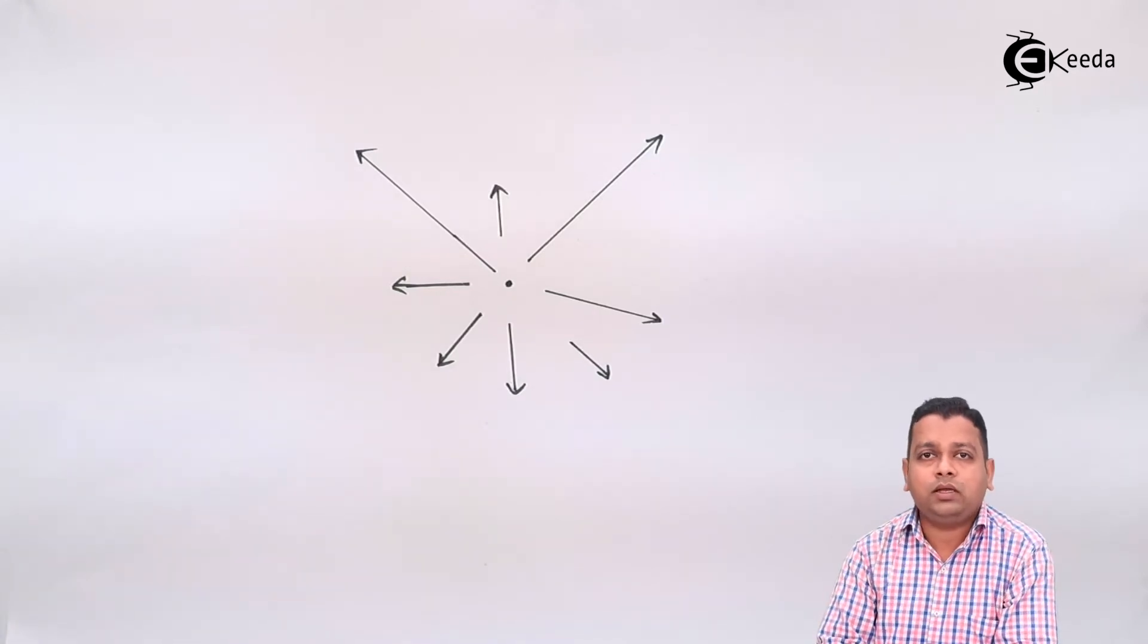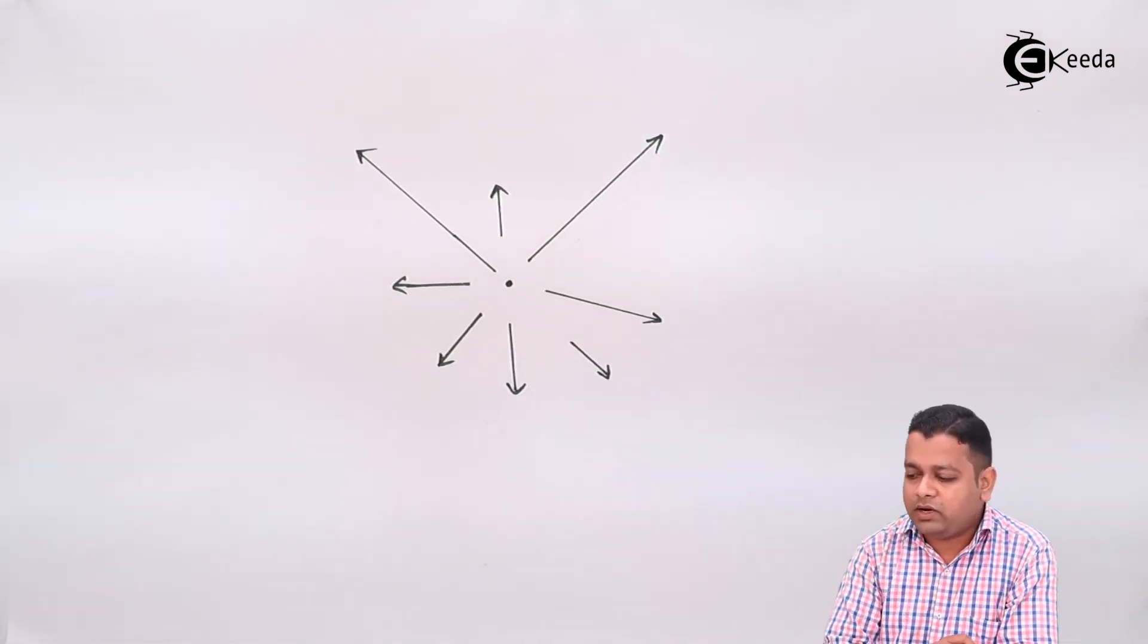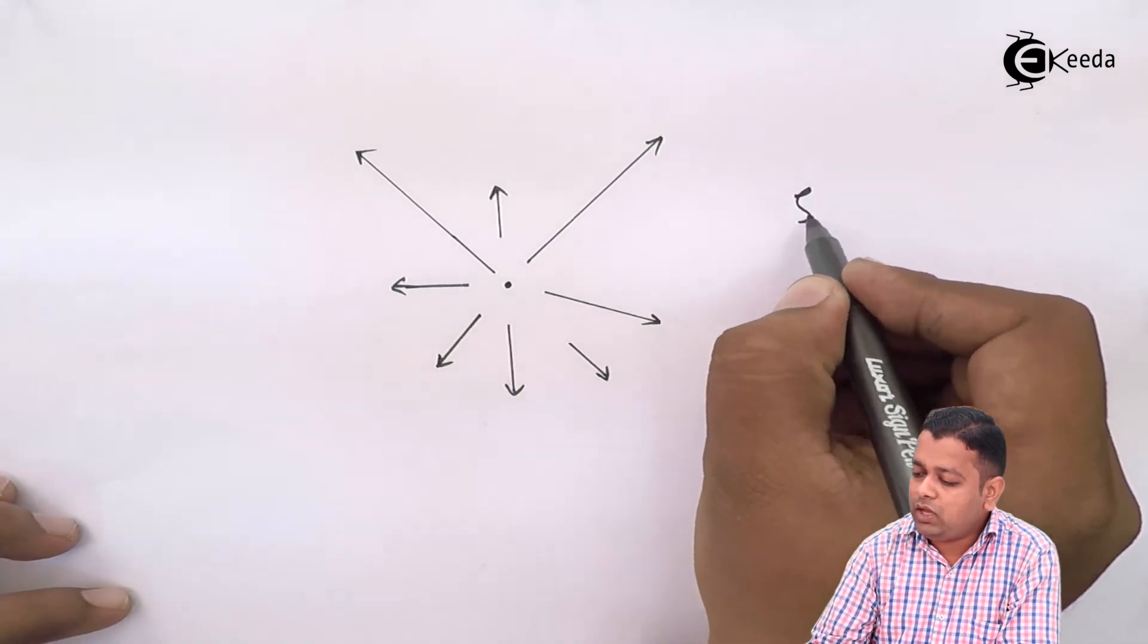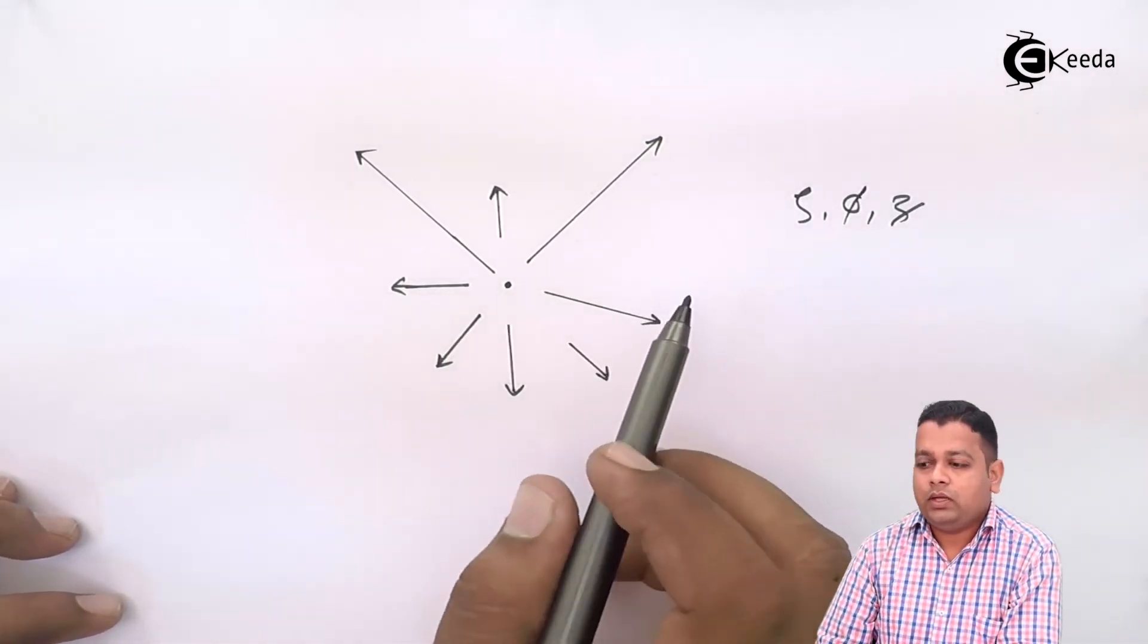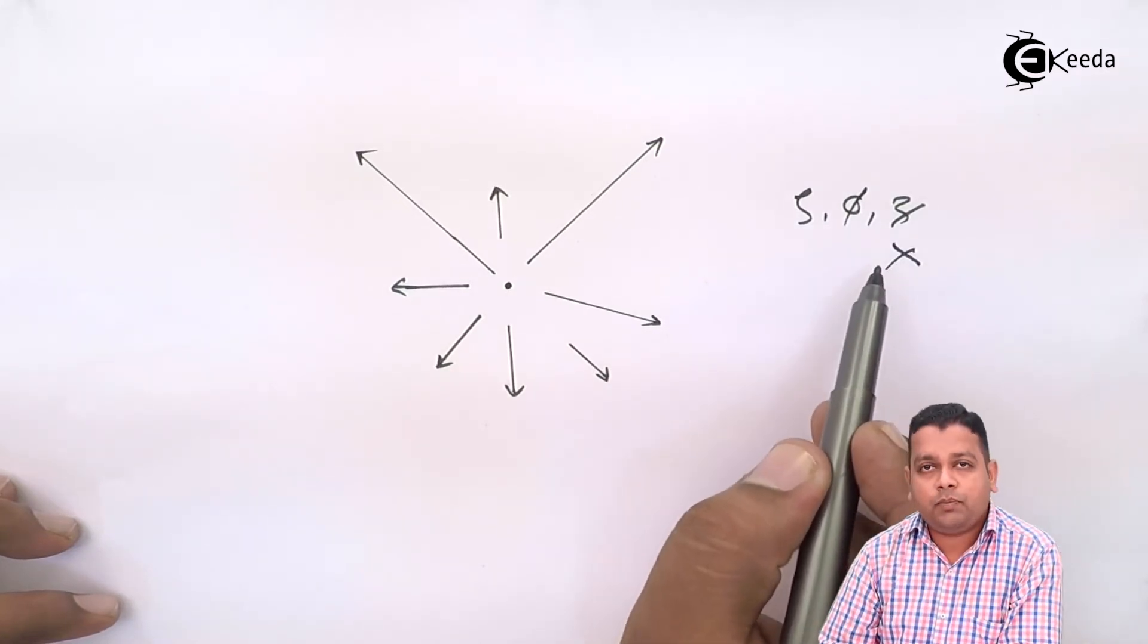For getting the electric field intensity because of the line charge, we have the convenience of using cylindrical coordinates. In cylindrical coordinates, we have rho, phi and z. So as we have taken the cross section, so z would not be affecting here.